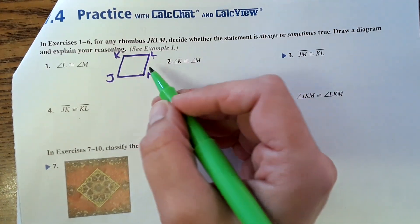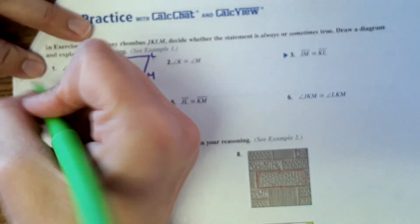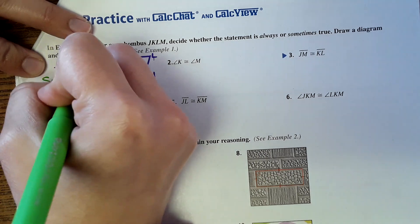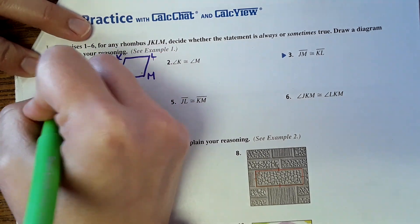It says angle L is congruent to angle M. Well, not always because we can see right there they're not equal, but the time it would be equal is in a square. So sometimes when the rhombus is a square.